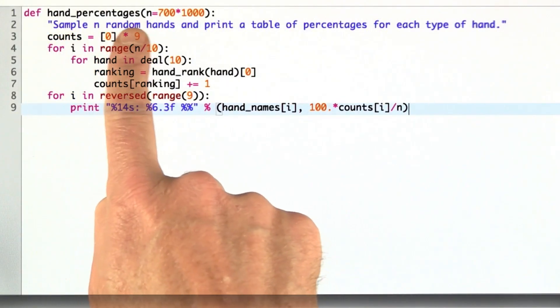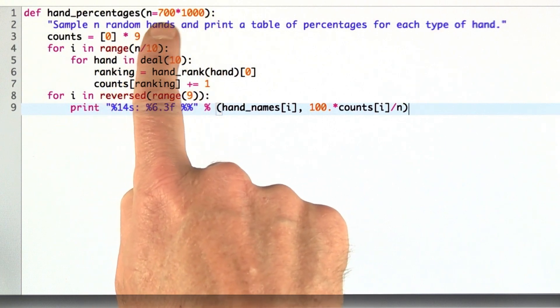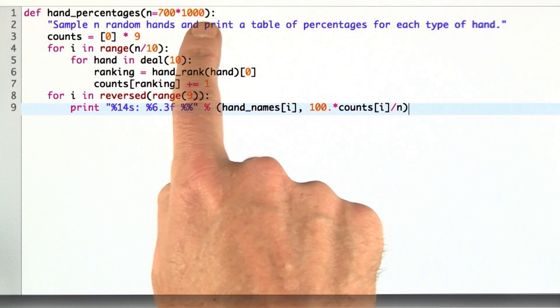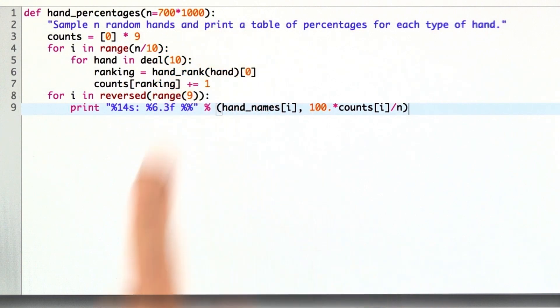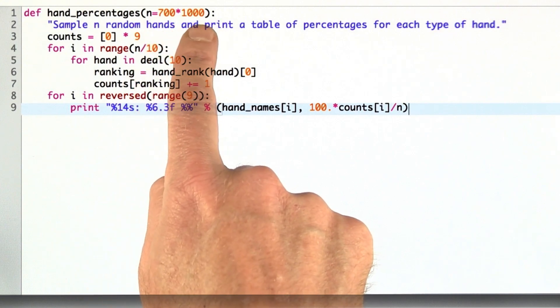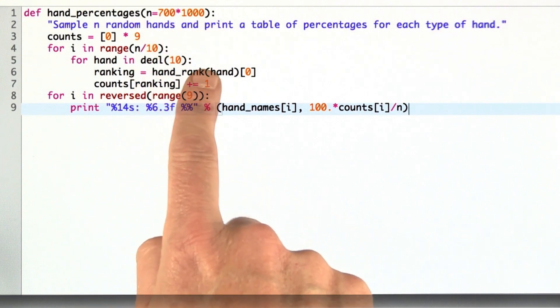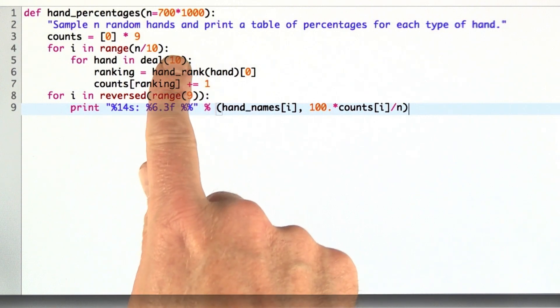Here's the code to calculate the hand percentages. I give a default value for n, the number of deals that we're going to do, the default of 700,000, but you can put in as many as you want. I should say, don't try to run this function here with 700,000 as the input because it will take too long. It should take 20 or 30 seconds. Running on our servers, we don't let you run that long.